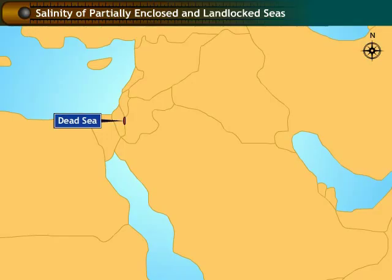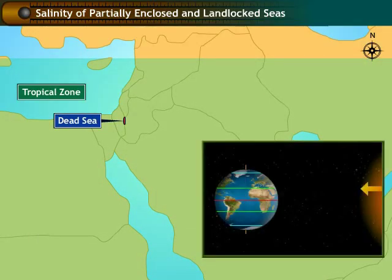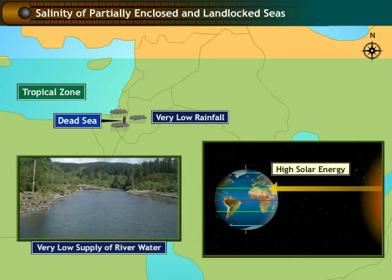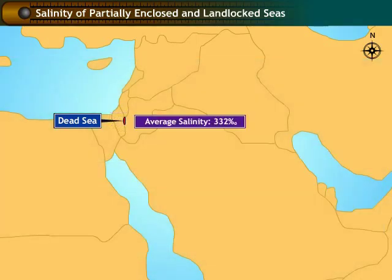The Dead Sea is located in the tropical region. The rate of evaporation in this region is very high due to high solar energy. The rainfall around the Dead Sea is very low, with hardly any river reaching this sea. Hence, the average salinity in the Dead Sea is 332 parts per thousand.